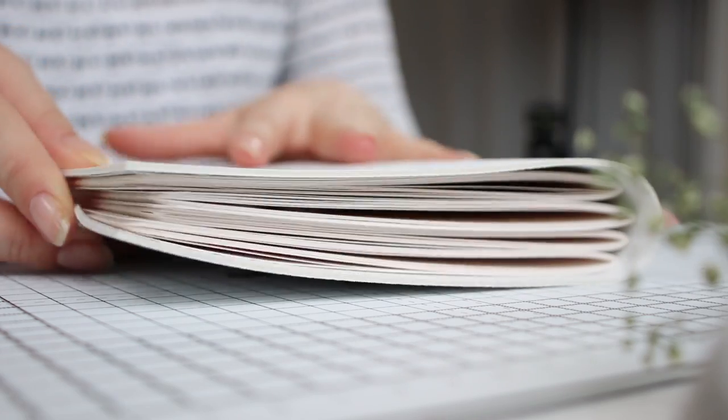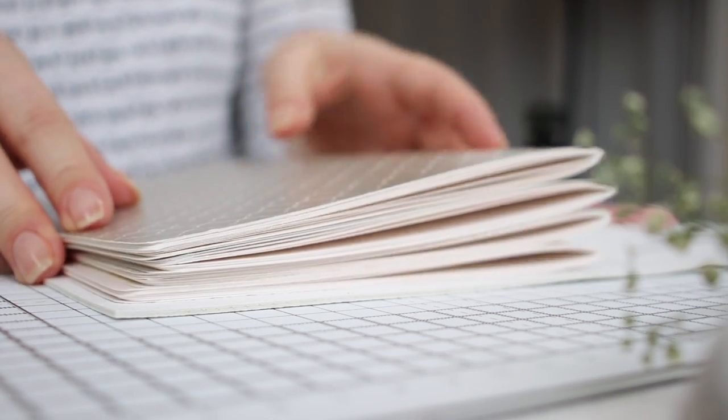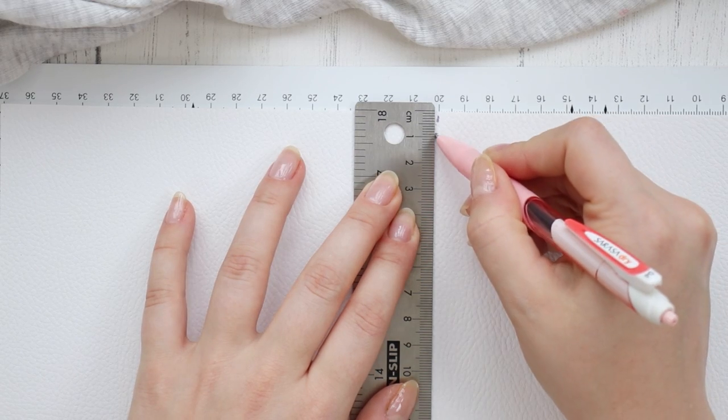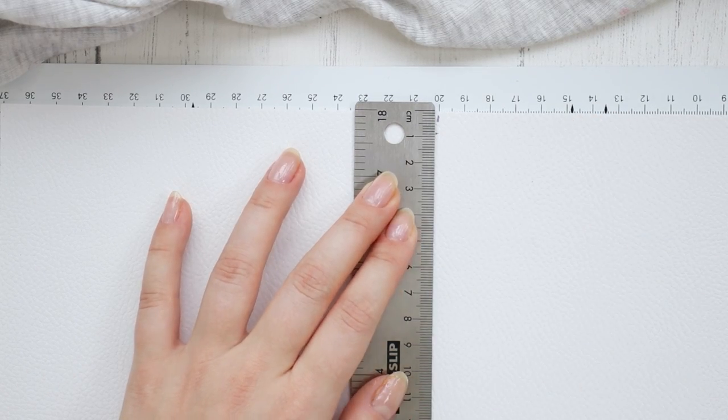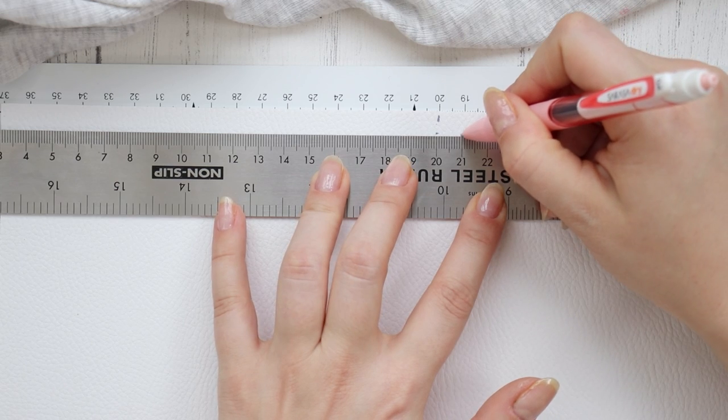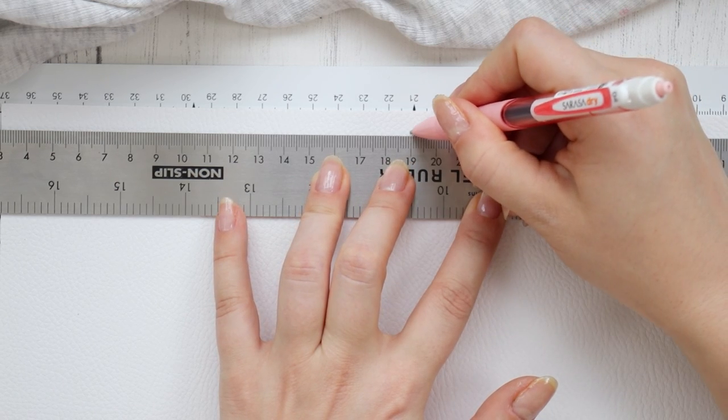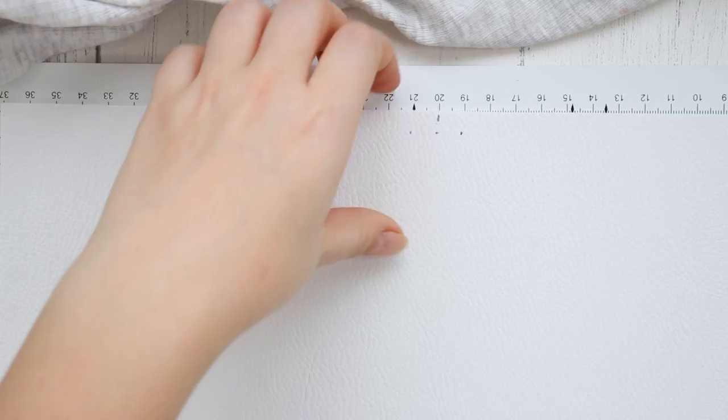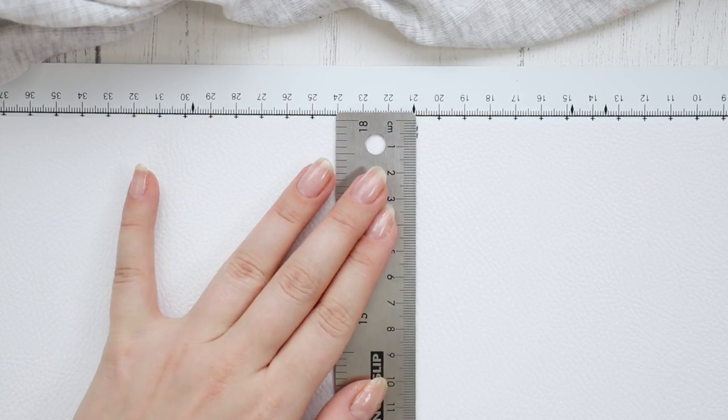If everything looks good, then we are ready to start making the holes for the eyelets. So for that you want to find the middle of the cover and then measure about one centimeter from the top and then one centimeter on either side. And then do the same for the bottom of the cover as well.